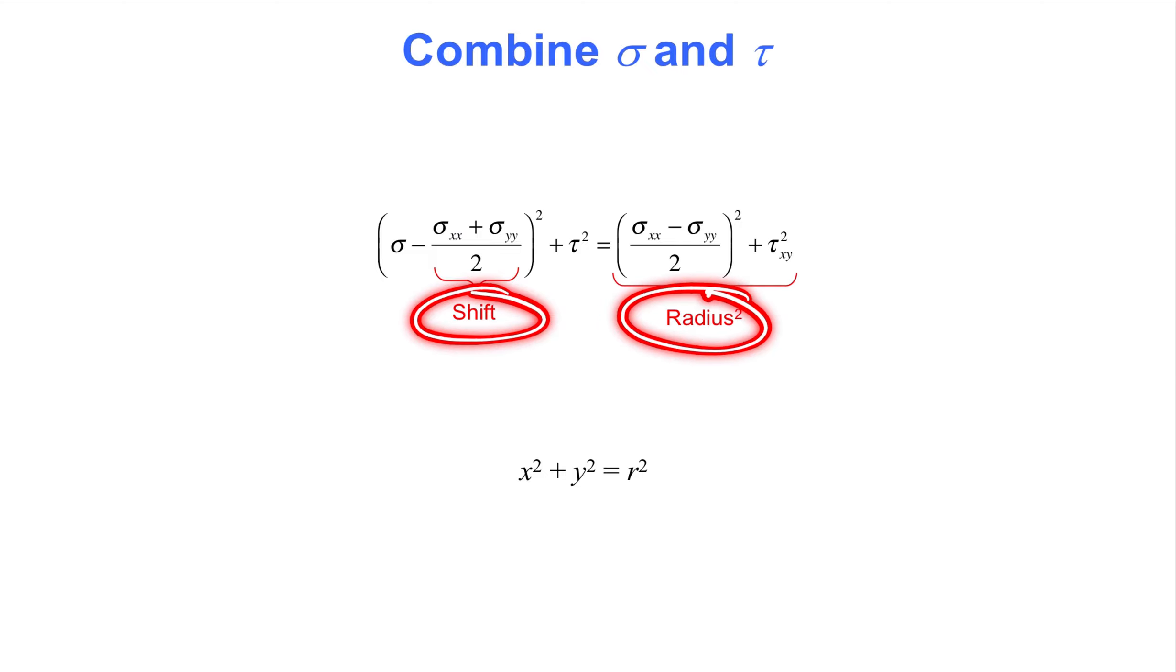Every point on the circle is a stress state, meaning that every point on the circle is one realization of sigma and tau, for a particular orientation of the inclined surface from the previous slide. This representation of rotated stress states is ingenious, but caution must be applied in its practical use because of the variety of sign conventions that can be adopted.